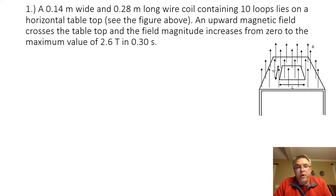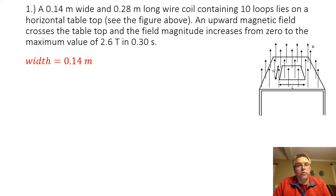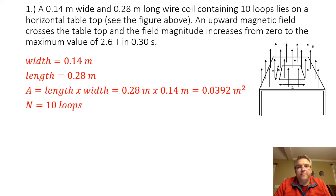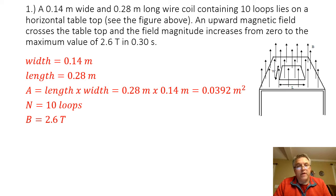Let's start with looking at what we are given in the problem. We are given the width of the loop of wire, 0.14 meters, and the length of the loop of wire, 0.28 meters. To find the area, I multiply length times width, and I find an area of 0.0392 square meters. There are 10 loops in the wire, and the magnitude of the magnetic field is 2.6 tesla. The field goes from 0 to its maximum value in 0.30 seconds.